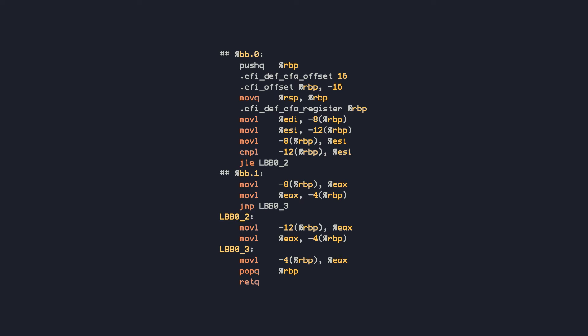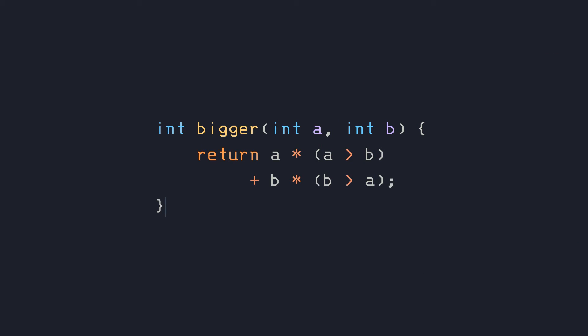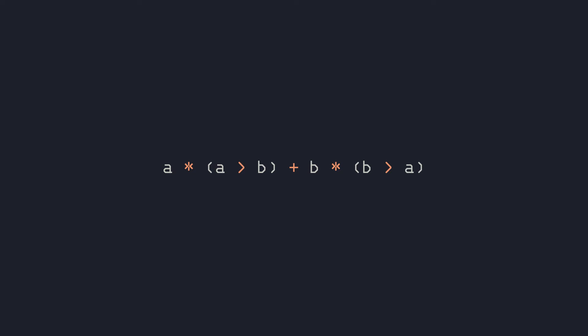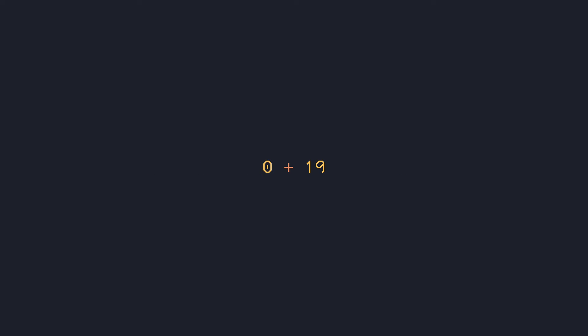Now let's look at how we can write the same function without branches. This is possible in C because it implicitly evaluates relational operations to a 1 or 0. Let's run this expression through an example. Let A equal 3 and B equal 19. The bigger of these would be 19, and we would expect this expression to be returned by the function. As precedence goes, we evaluate the brackets first, then the multiplication, and finally the addition to get the result, which is exactly what we expected.